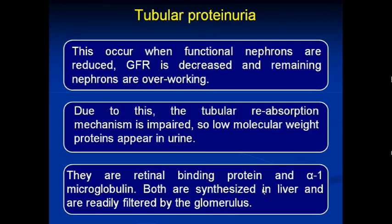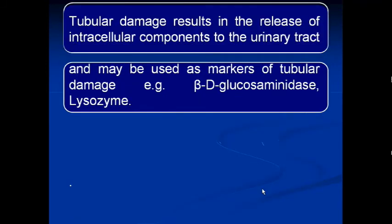Tubular proteinuria occurs when functional nephrons are reduced. The glomerular filtration rate decreases and remaining nephrons are overworked, impairing the tubular reabsorption mechanism. As a result, low molecular weight proteins appear in urine. Examples include retinal binding proteins and alpha-1 microglobulin, both synthesized in the liver and readily filtered by the glomerulus. Tubular damage results in the release of intracellular components into the urinary tract, and markers such as beta-D-glucosaminidase and lysozyme appear in urine.